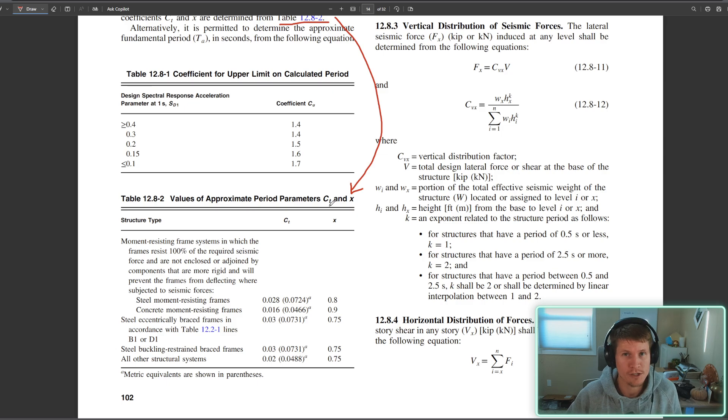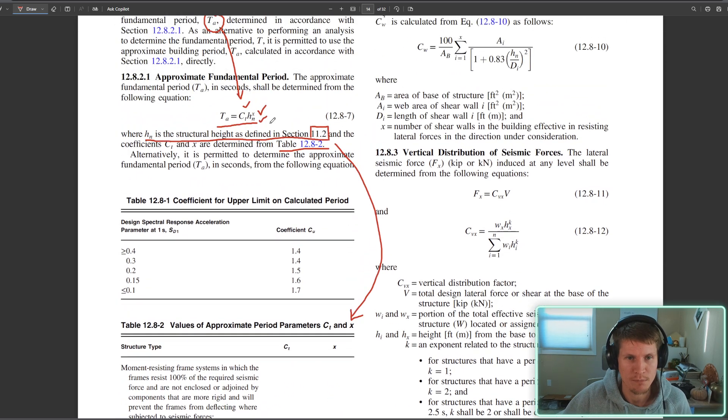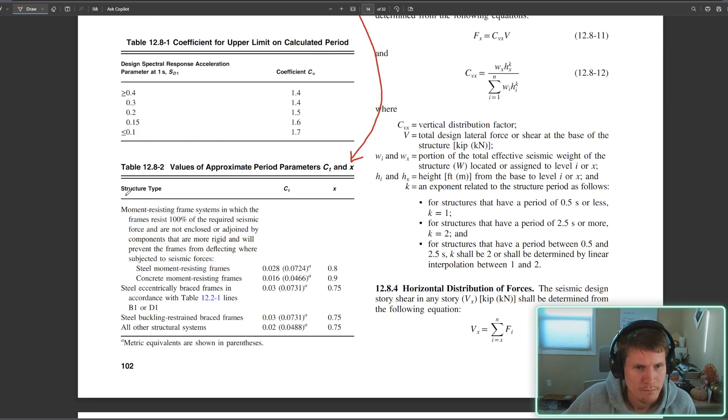If we scroll a little bit further, oh my gosh, it's like they wanted to lay this out simplistically for engineers - it contains the values of those variables depending on your vertical lateral system of each of your structures. We have three structures, each has a different vertical lateral system, so we need to get a C_t and an x value for each one, plug them in to the equation above to get an approximate period, and then compare that to the predominant period given to us in the problem statement for the earthquake.